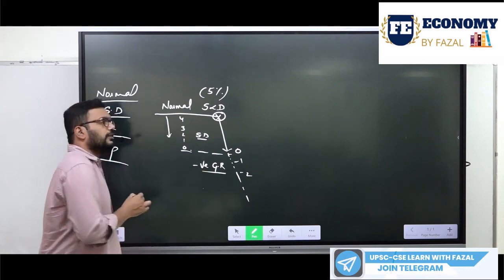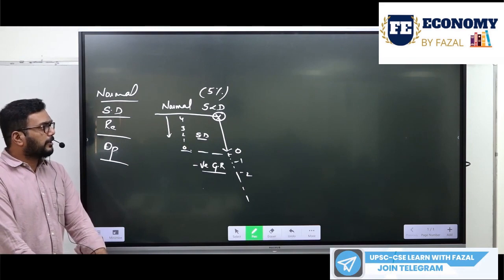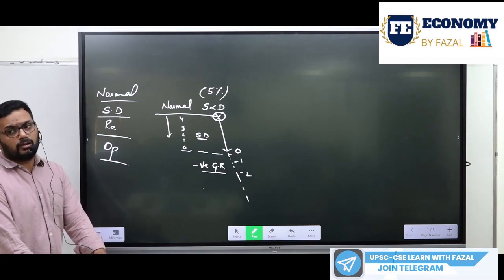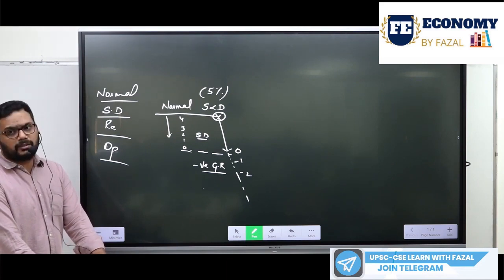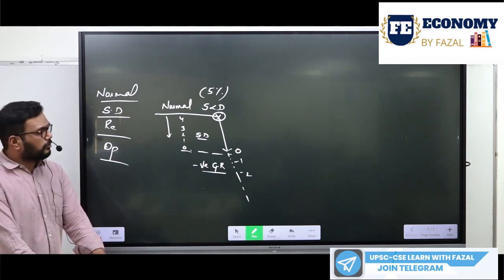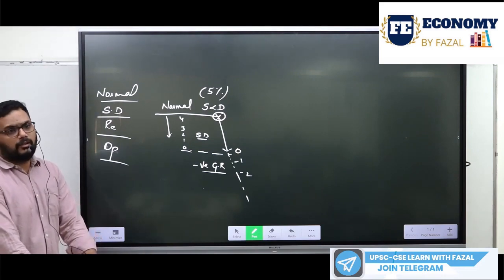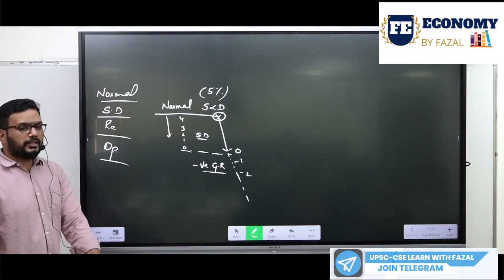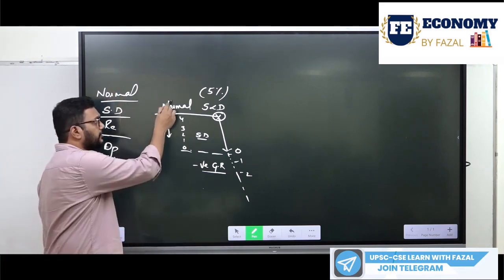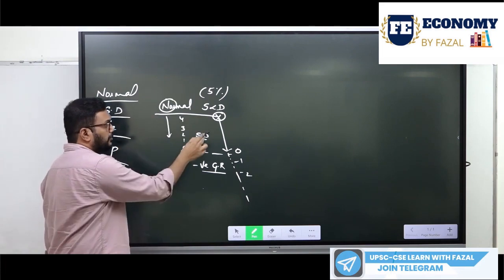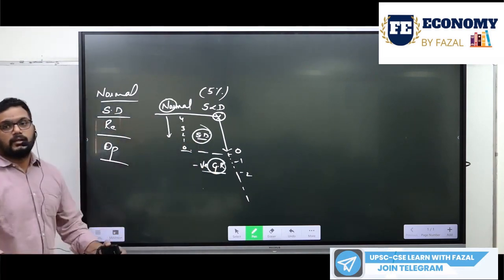A growth rate is called negative when the cutoff of supply and demand continues and the growth rate falls below zero into the negative phase. So the three stages are: normal stage, slowdown where growth is positive but falling, and negative growth rate.